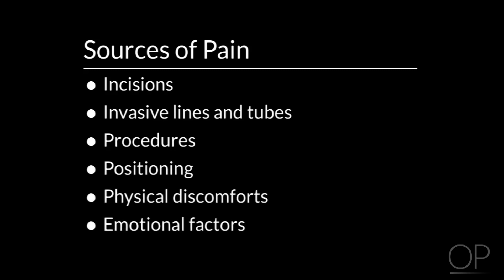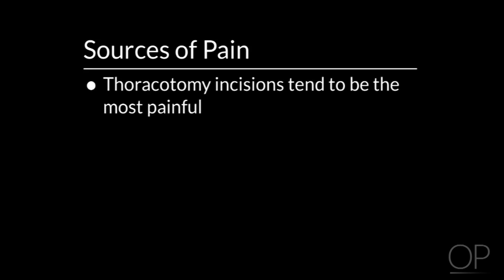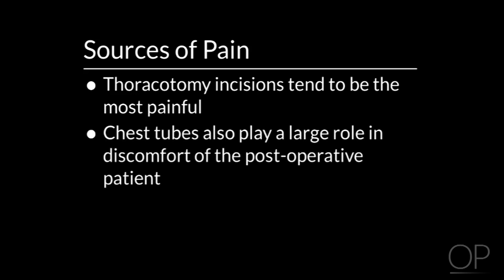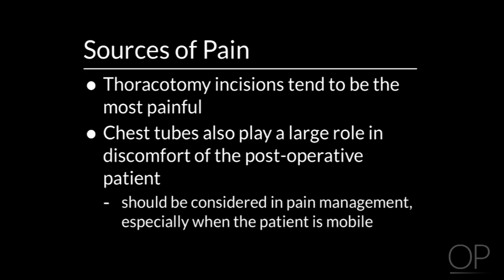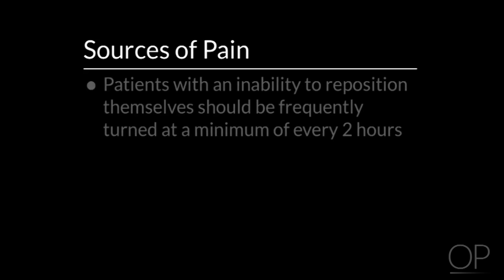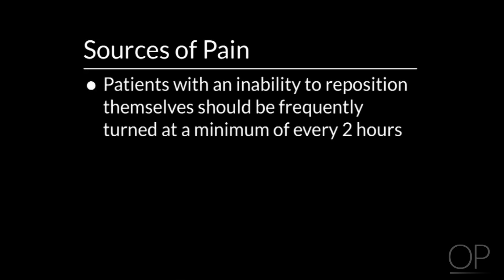Incision pain from surgical procedures in the cardiac intensive care unit differs depending on the type of procedure performed. For example, thoracotomy incisions tend to be the most painful due to rib manipulation. Chest tubes also play a large role in discomfort of the post-operative patient and should be considered in pain management, especially when the patient is mobile.